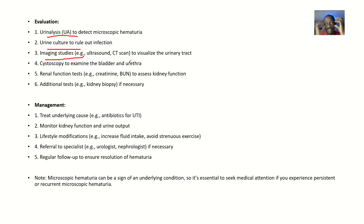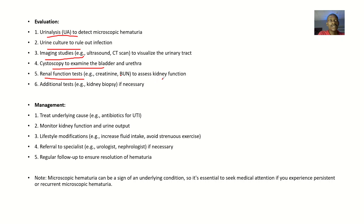You can do imaging studies like ultrasound or CT scan to visualize the urinary tract. You could do cystoscopy to examine the bladder and urethra. You could do renal function tests like creatinine and blood urea nitrogen to assess kidney function and see if the hematuria is affecting the kidneys. You could also do additional tests like a kidney biopsy if necessary.